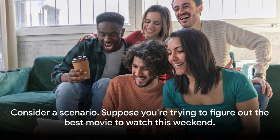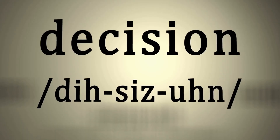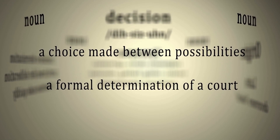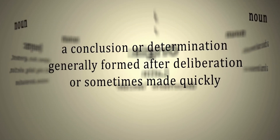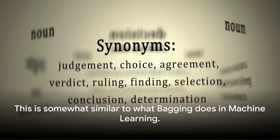Consider a scenario. Suppose you're trying to figure out the best movie to watch this weekend. You ask your friends, check out online reviews, and even refer to popular movie rating platforms. In the end, you make an informed decision based on a consensus of all these different sources. This is somewhat similar to what bagging does in machine learning.